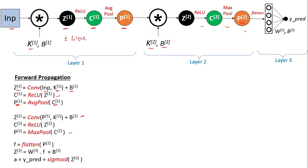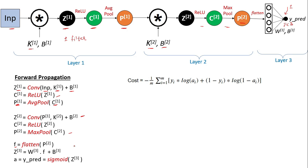After the ReLU we perform max pooling to obtain P2. In the third layer we flatten P2 — which may be a multi-dimensional tensor — into a single-dimensional vector F. This F is given as input to the fully connected layer FC3, which has a single node with a sigmoid activation function giving us y-pred as output. Once we have y-pred we can compute the cost function; for binary classification with sigmoid we use the standard binary cross-entropy loss.